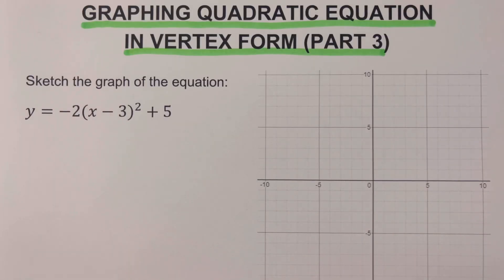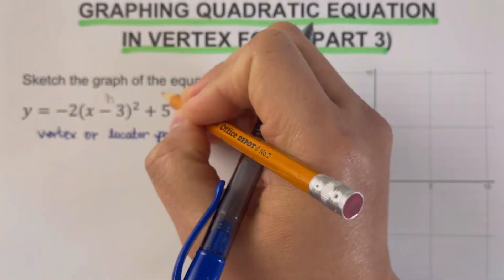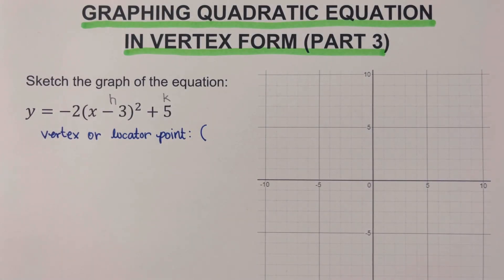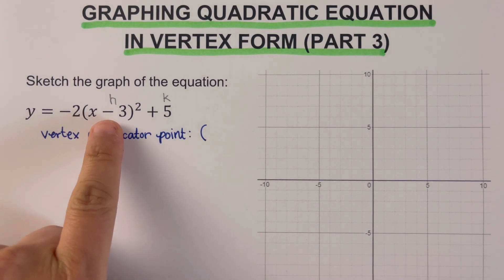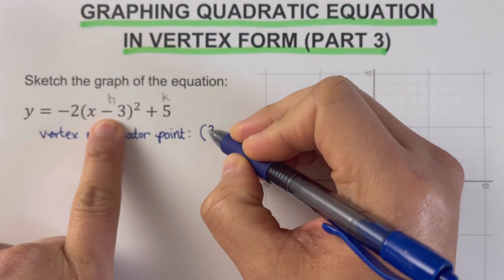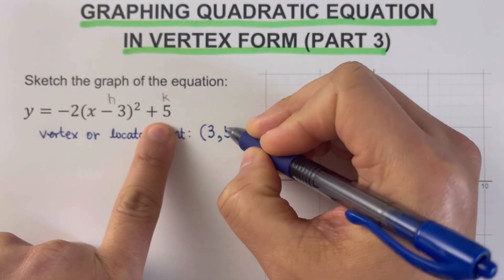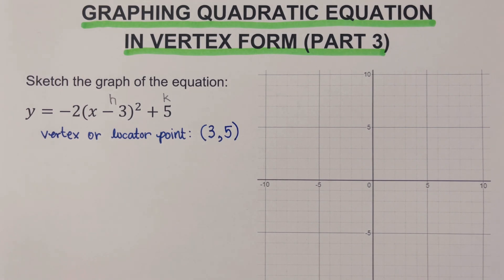Now we go over the first problem. The first step is to determine the locator point, or the vertex. Here's a trick: for the vertex (h, k), we switch the sign of h, so a negative three becomes a positive three, and we keep the sign of k, which is a positive five. So the locator point or vertex of this parabola is (3, 5).